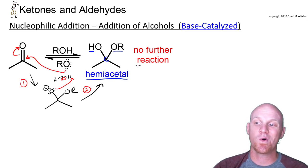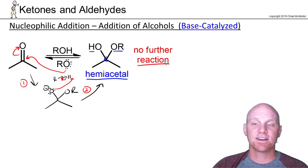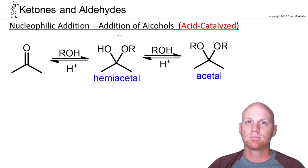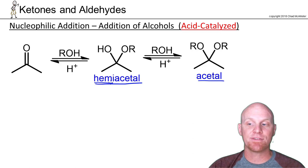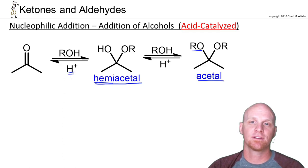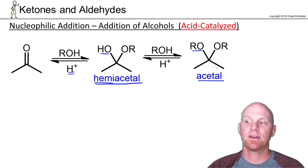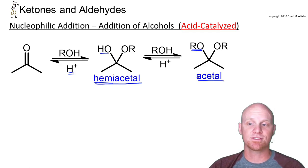One thing to note: under base-catalyzed conditions, I said no further reaction. That makes sense only in contrast with the acid-catalyzed mechanism, where we can actually go further than just the hemiacetal. Under acidic conditions, you can turn an OH — a bad leaving group — into a good leaving group by protonating it to make water. If it leaves, it makes room for a second equivalent of alcohol to attack, giving the full acetal. You can't do this under basic conditions because you can't protonate, which is why base-catalyzed gives no further reaction.